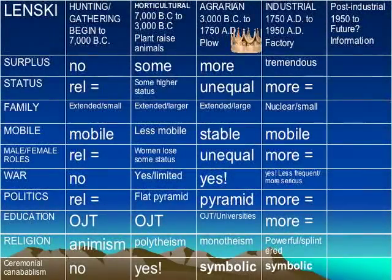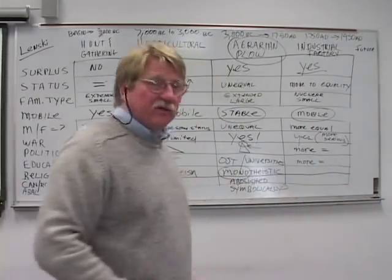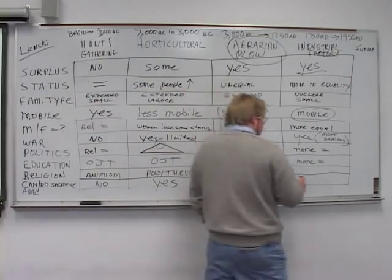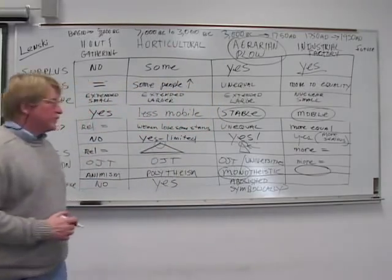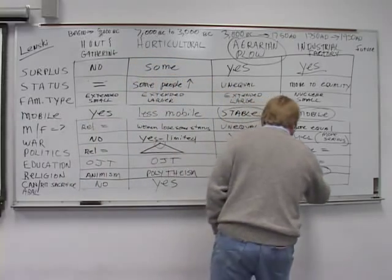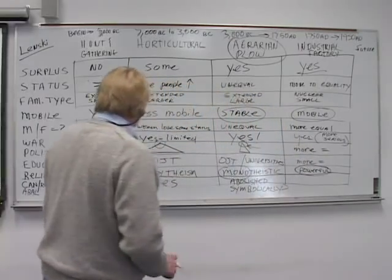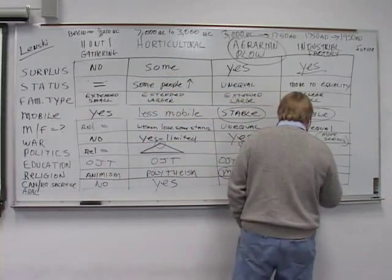Education again becomes more equal because the society says we need people to be equal. We invented community colleges because we realized we have lots of bright, talented people out there we weren't tapping the resources of because they didn't fit the traditional university. So education becomes more equal. Religion is still there. It's very monotheistic, lots of splits in religion, lots of disagreements, but it's still an incredibly powerful force in every society. And it's existed in every single society we've ever found. Again, we don't have ritual sacrifice or ceremonial cannibalism except symbolically.